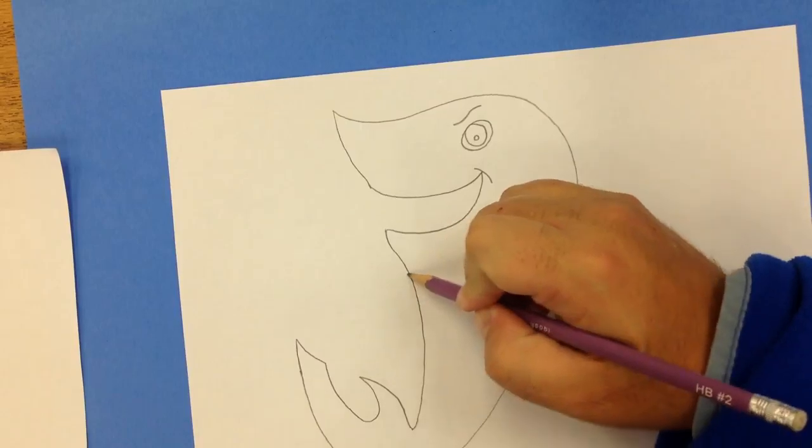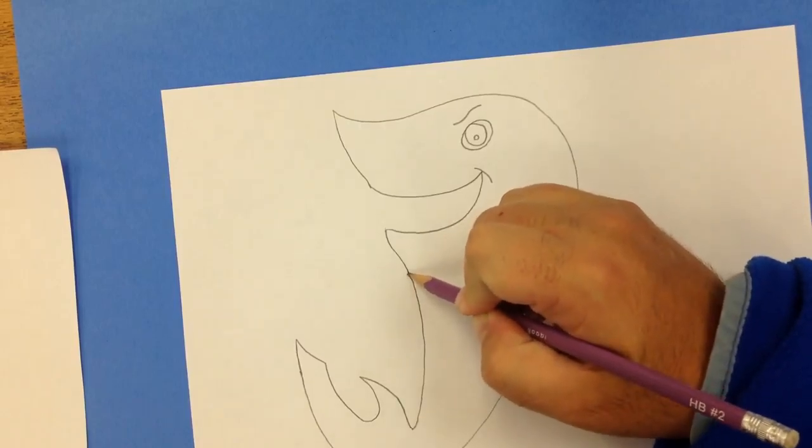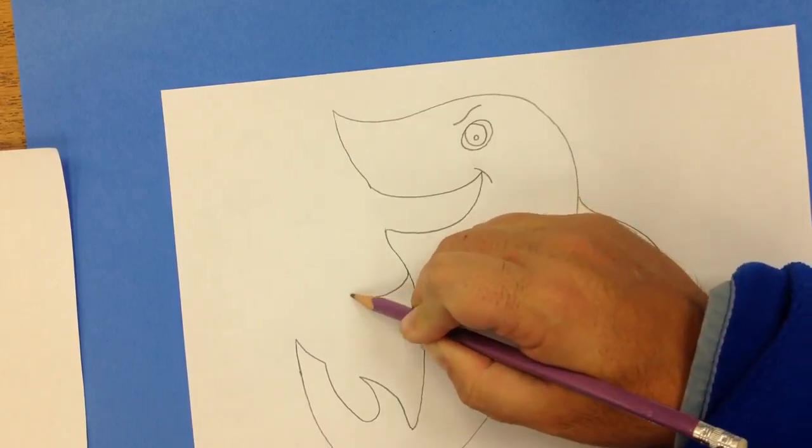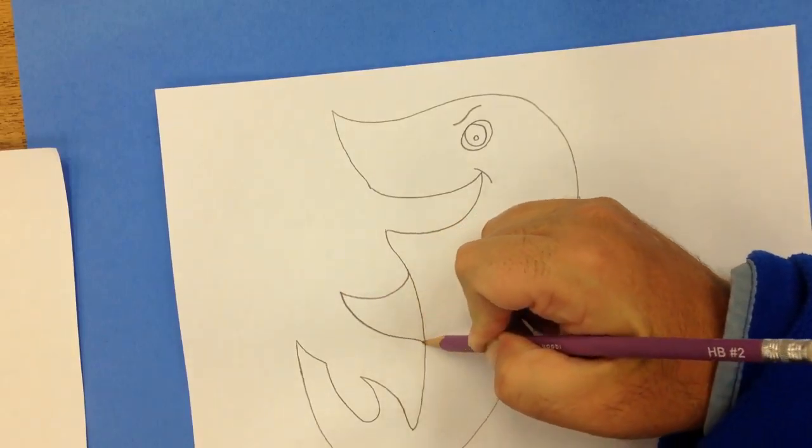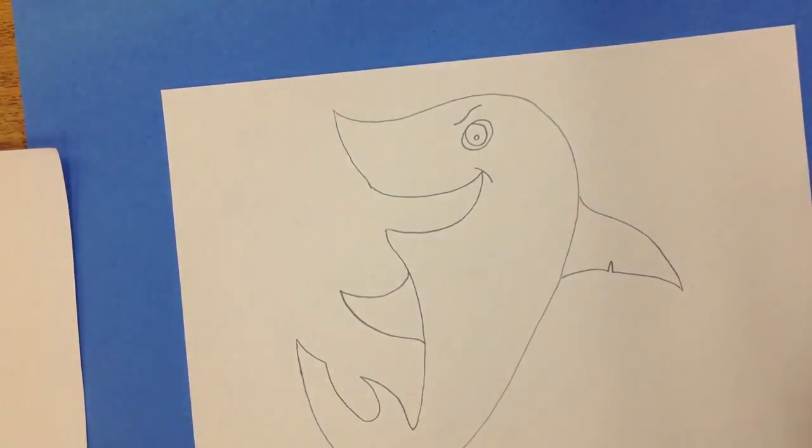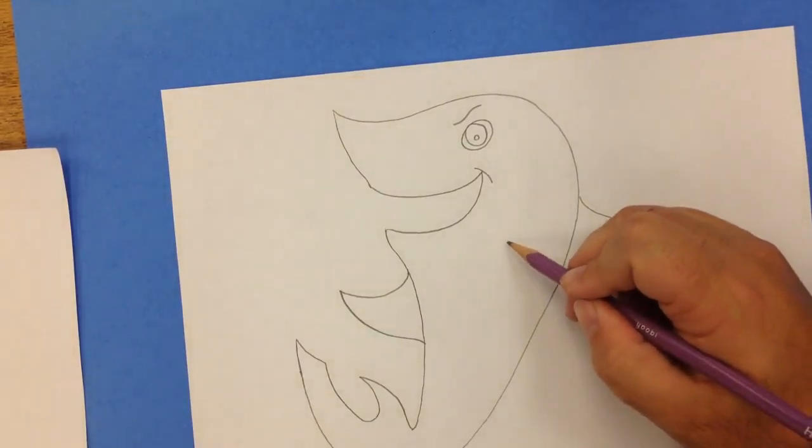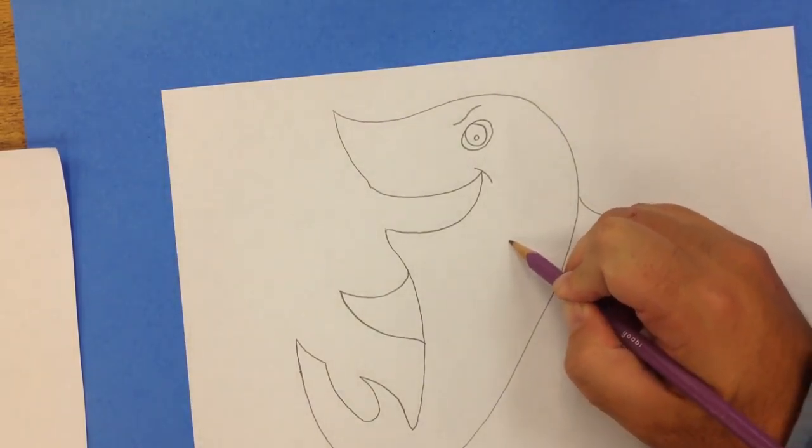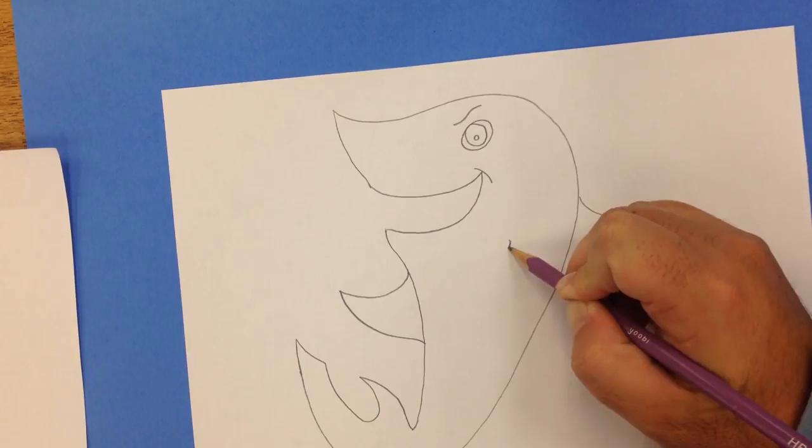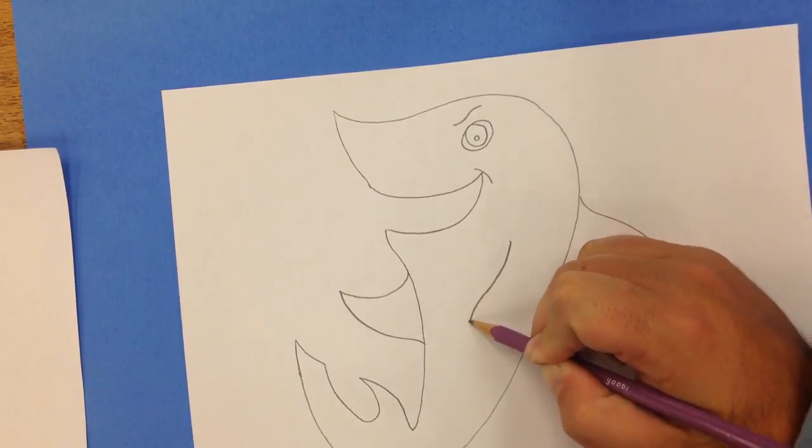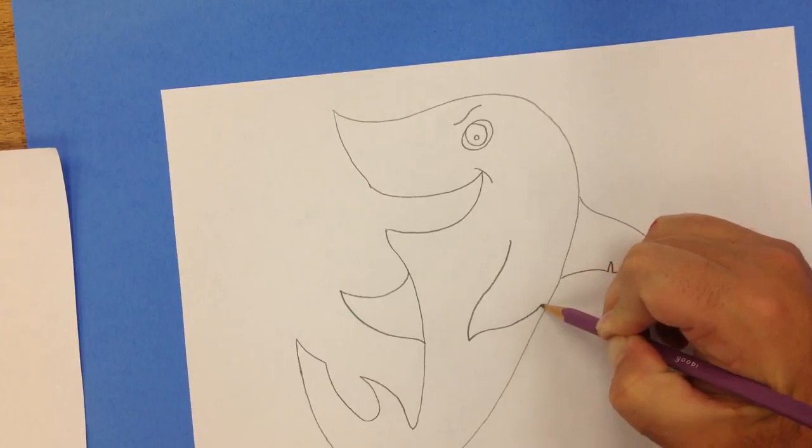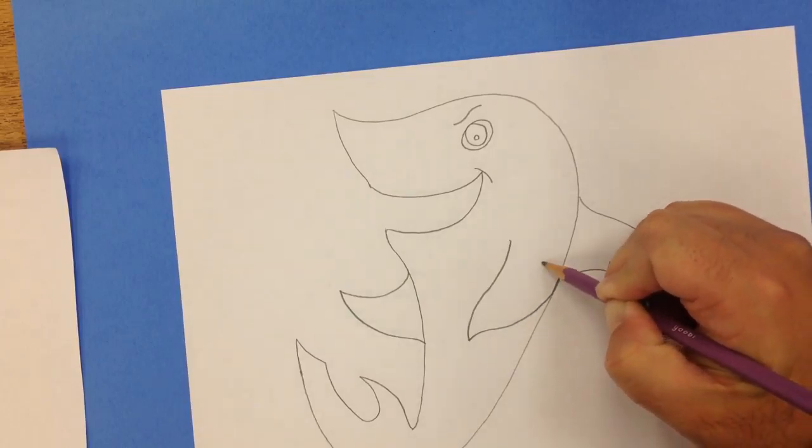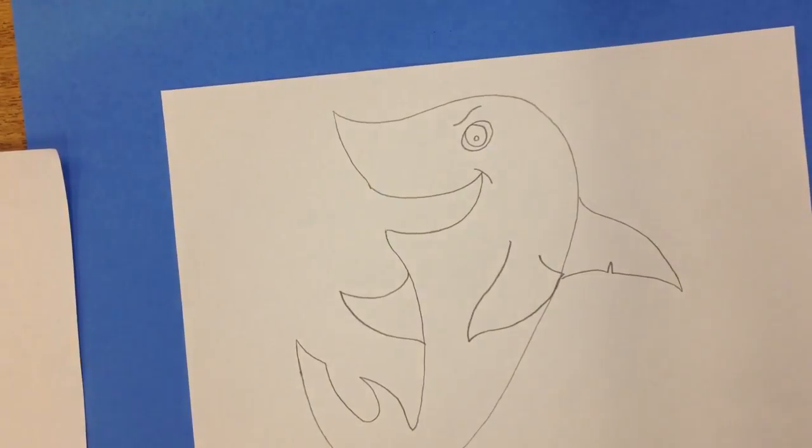Next, I'm going to put on the two pectoral fins that kind of look like arms in this drawing. So we'll have one pointing like this, and another over here on this side.